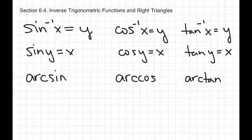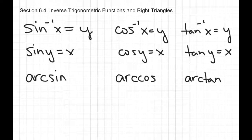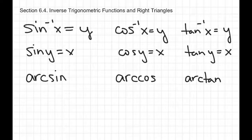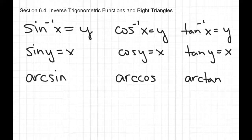Section 6.4 is about inverse trigonometric functions in right triangles. In order to find an angle, if you already know the sine, cosine, or tangent of the angle, you can use something called an inverse sine, inverse cosine, or inverse tangent. You studied this in geometry and in algebra when you were trying to find missing angles in right triangles.